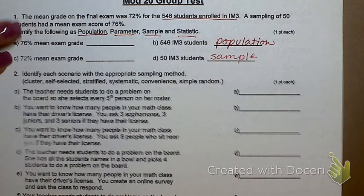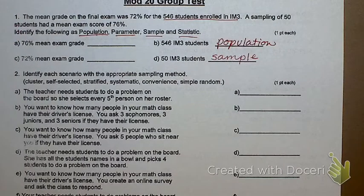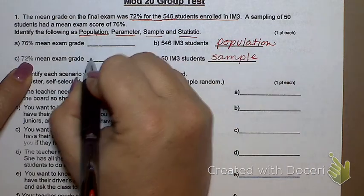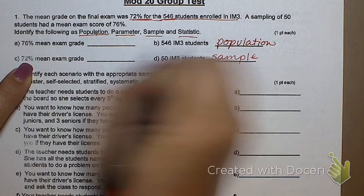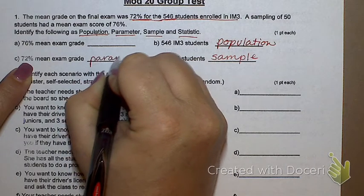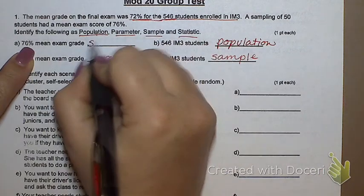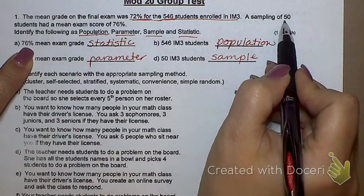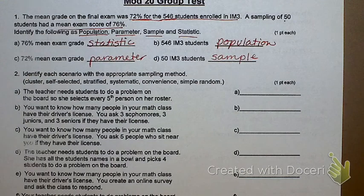I just got to figure out which is which. How do I determine parameter from statistic? The statistic is about the sample. S goes with S. The parameter is with the population. P goes with P. So for the entire group, 72% was the mean. What does that make 72%? If it's going with the population, that's my parameter. And that makes this one my statistic.